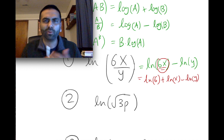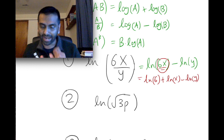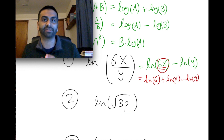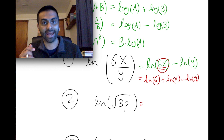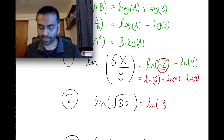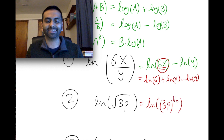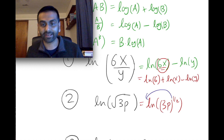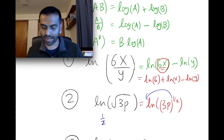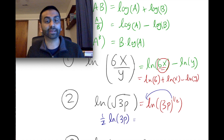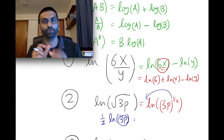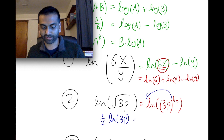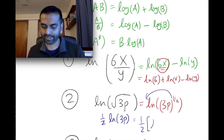What about the next problem? We didn't learn any rules with the square root — but actually, the square root of something can always be rewritten as that thing to the power of one-half. So first, rewrite this as ln of (3p) to the power of one-half. Now the third rule applies — the exponent can come down — so this one-half comes out front: one-half times the ln of 3p. We can go one step further because ln of 3p uses the first rule, splitting into one-half times the quantity ln of 3 plus ln of p.